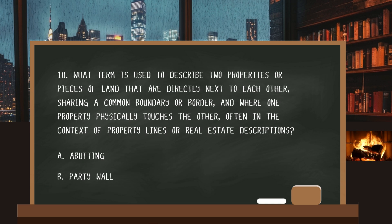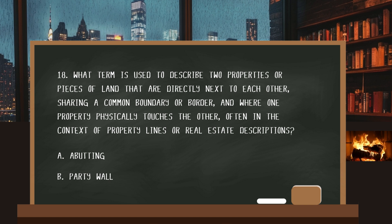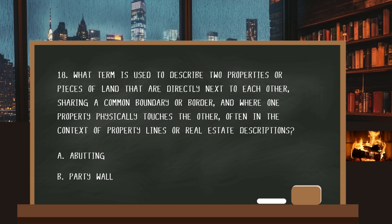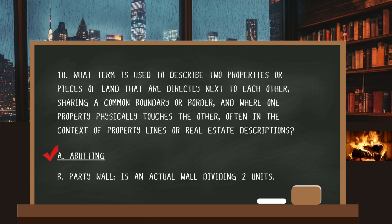Number eighteen. What term is used to describe two properties or pieces of land that are directly next to each other, sharing a common boundary or border where one property physically touches the other, often in the context of property lines or real estate descriptions? The answer: abutting. A party wall is an actual wall dividing two units.